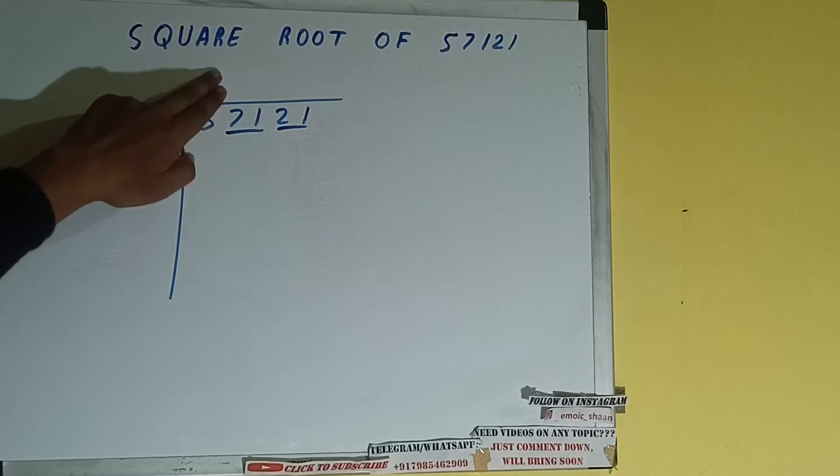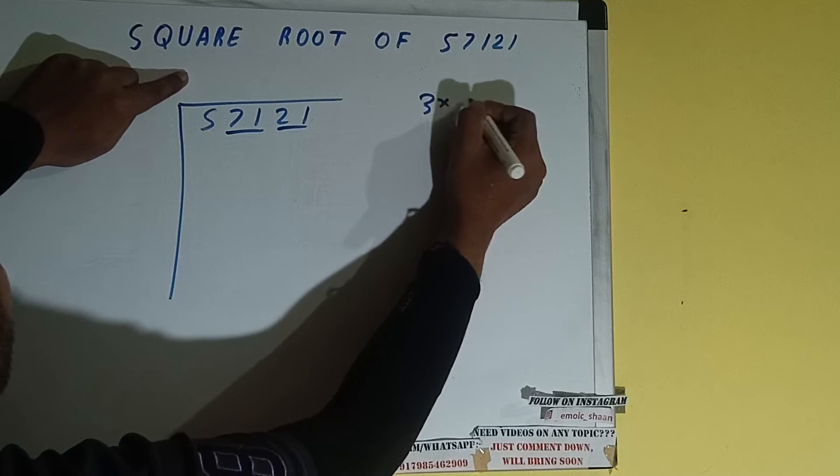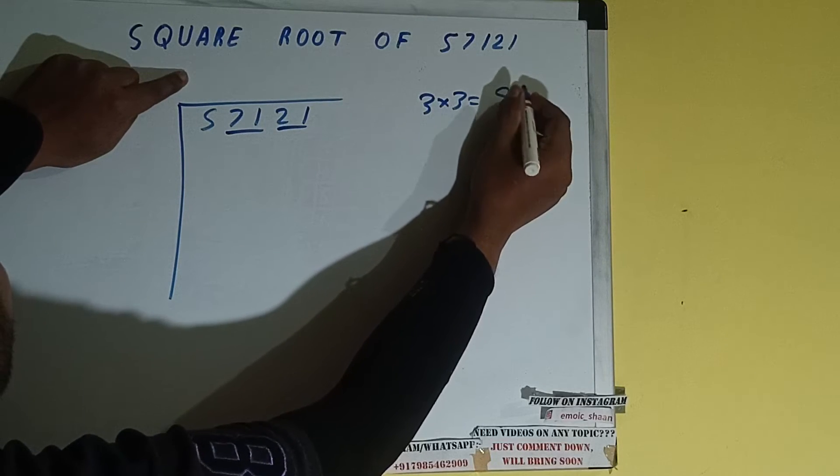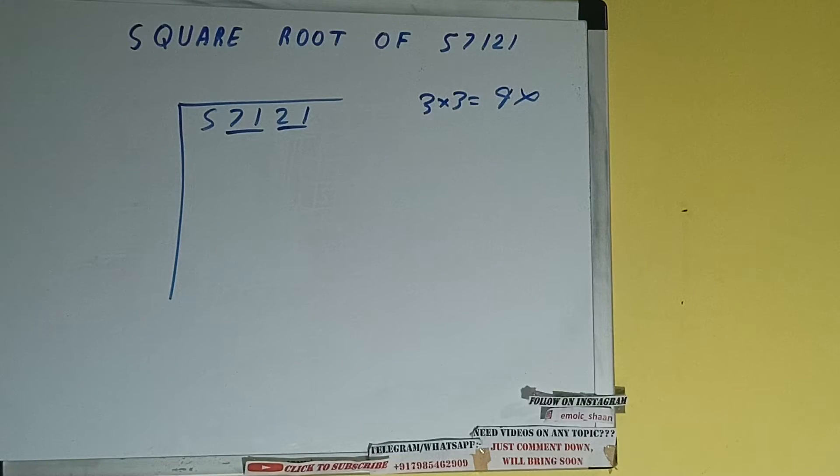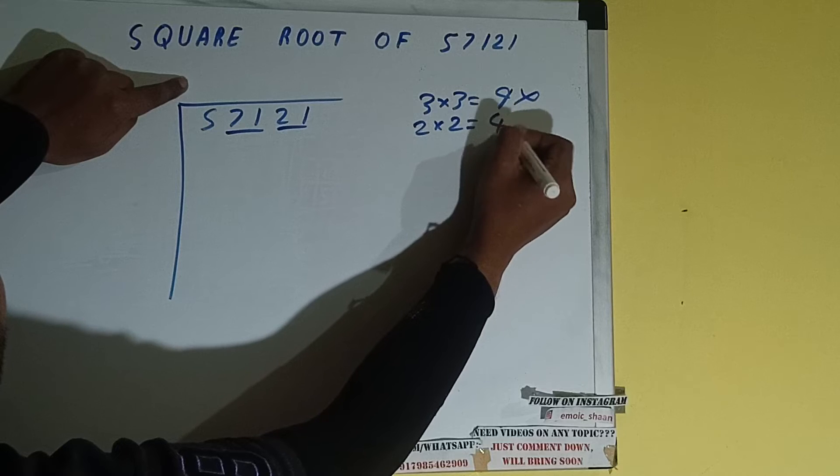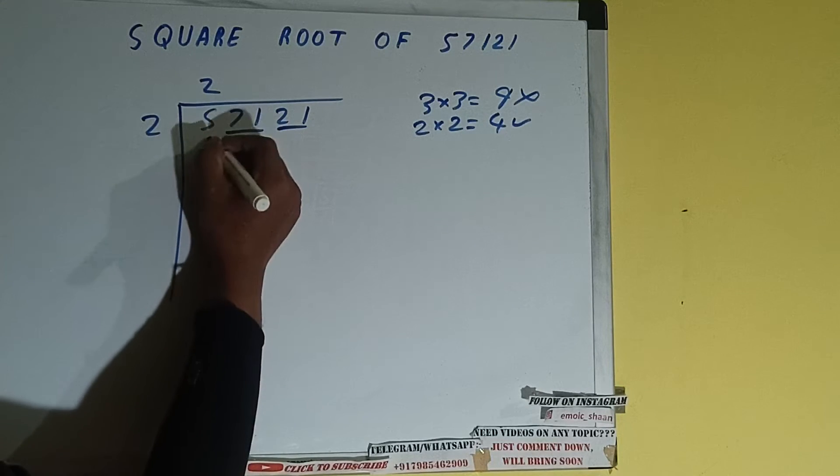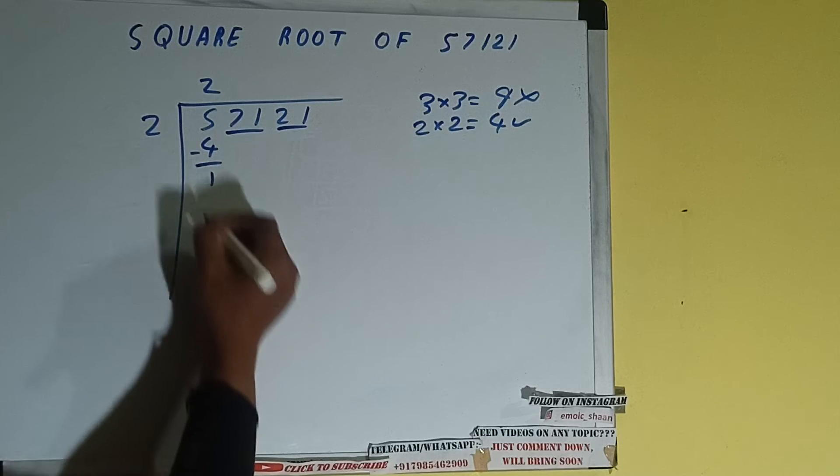The rule is whatever number we write here we need to write here also. So if we write three here and three here it will be nine which is greater than five, so we cannot take it. If we write two here and two here it will be four which is good to take. So two here and two here, four subtract, one will be left.